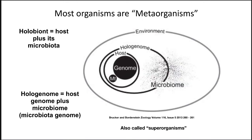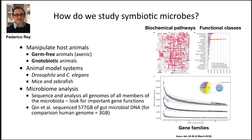Most organisms are meta-organisms, or super-organisms — I like the second term because it sounds much more exciting. A holobiont is the host plus its microbiota, so you are a holobiont if you consider all the organisms that are also on your body. A hologenome is the host genome plus the microbiota genome, and it is important because the genes of the microbiota also help the host.